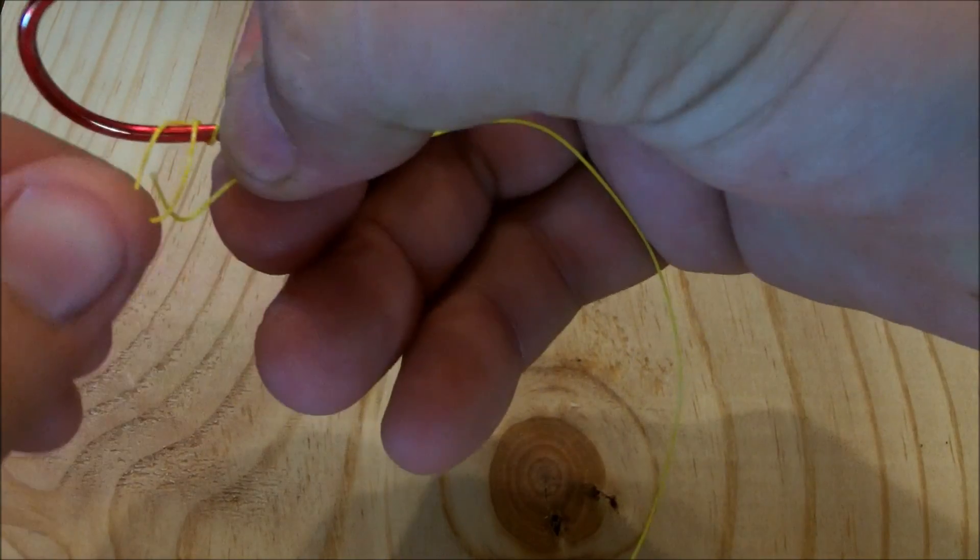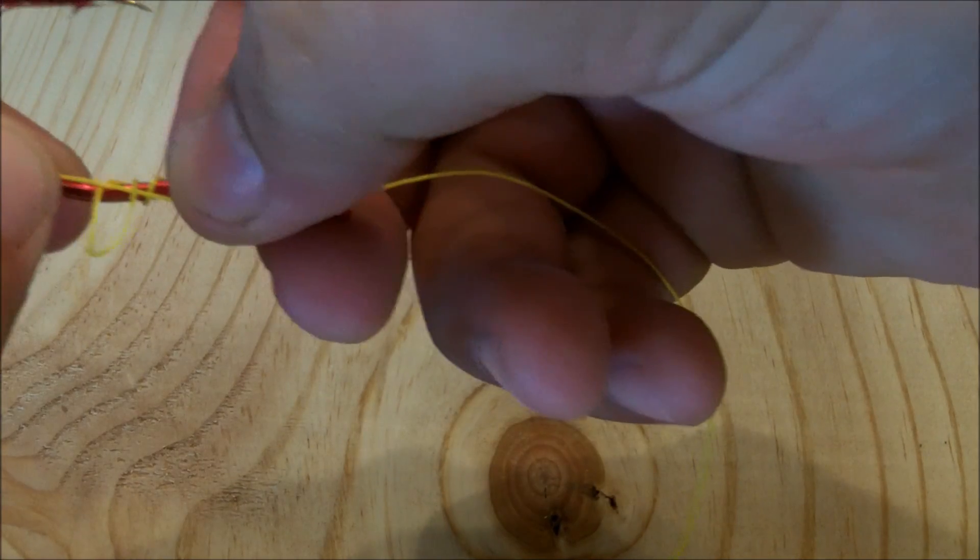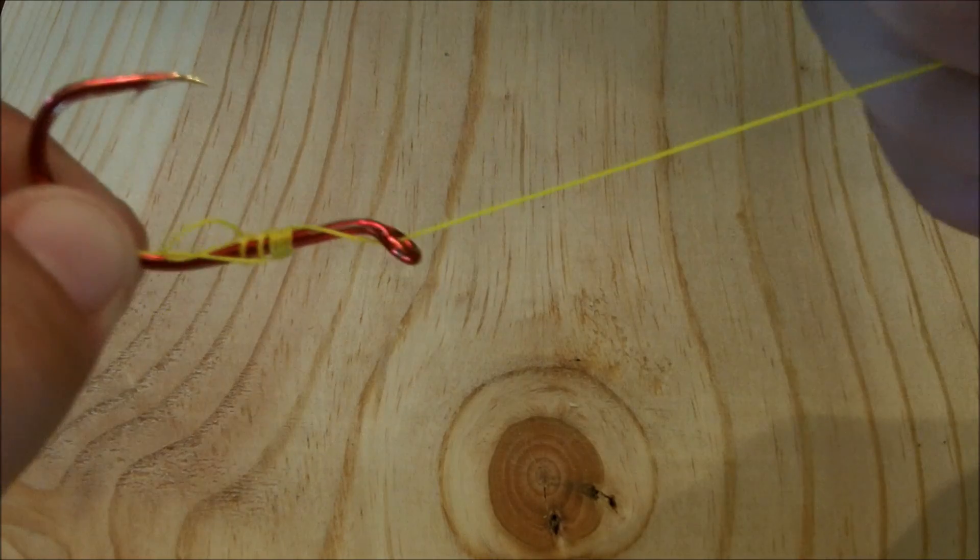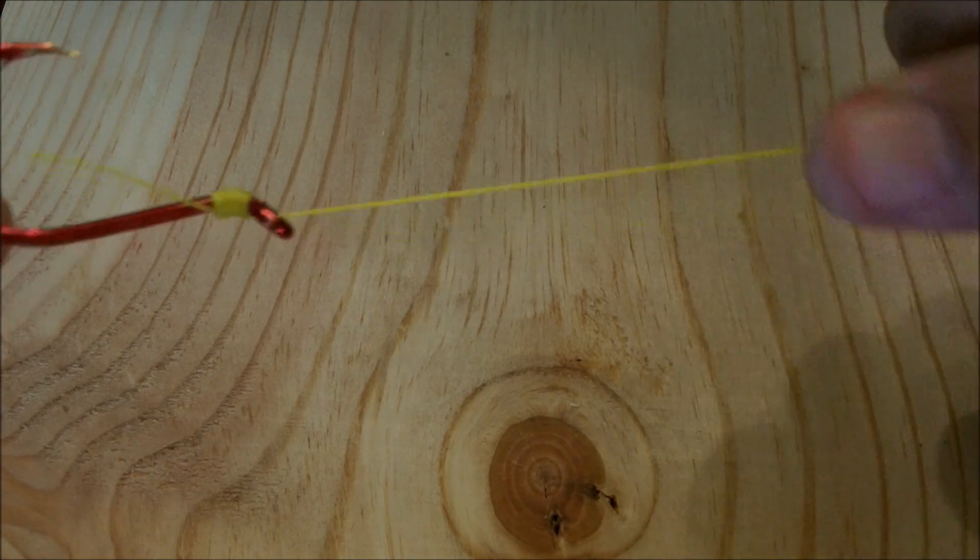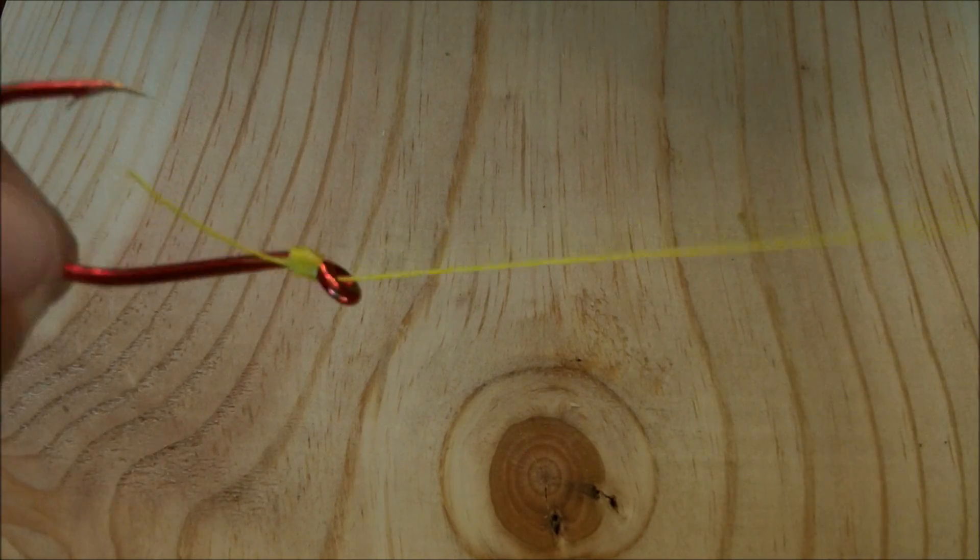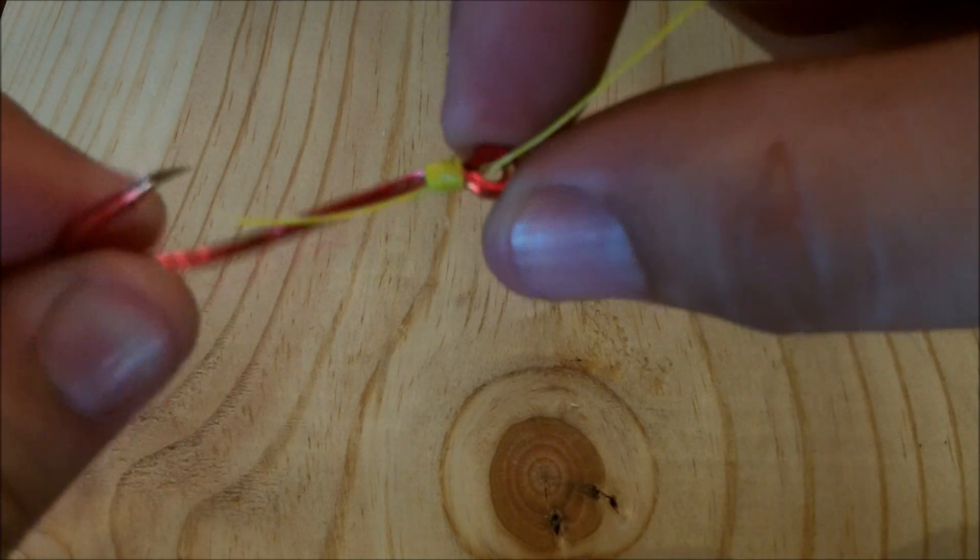Just run that tag end through that loop you made and then hold the tag end onto the hook. And then just pull on the line coming from your leader or your direct line from your rod and pull. The harder you pull, the tighter it's going to get and it actually has to get around this eyelet.